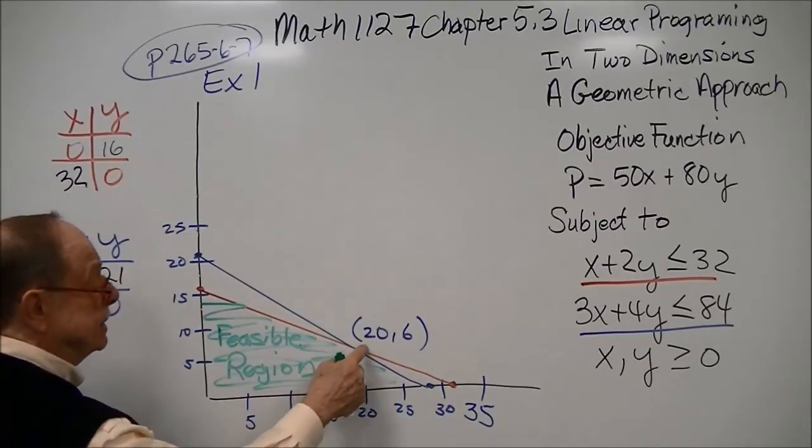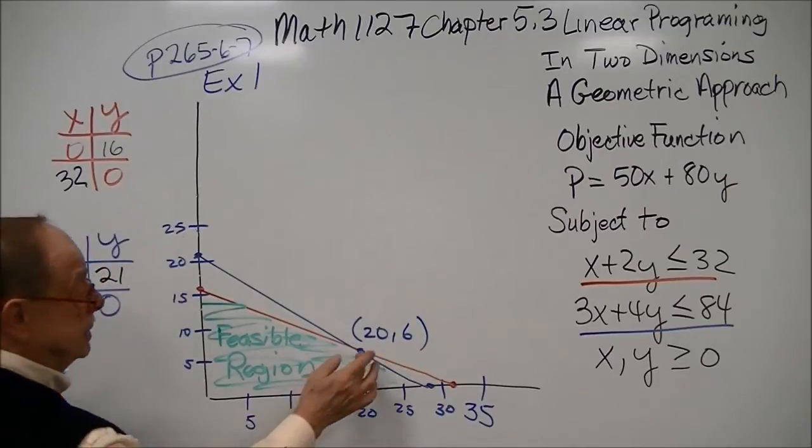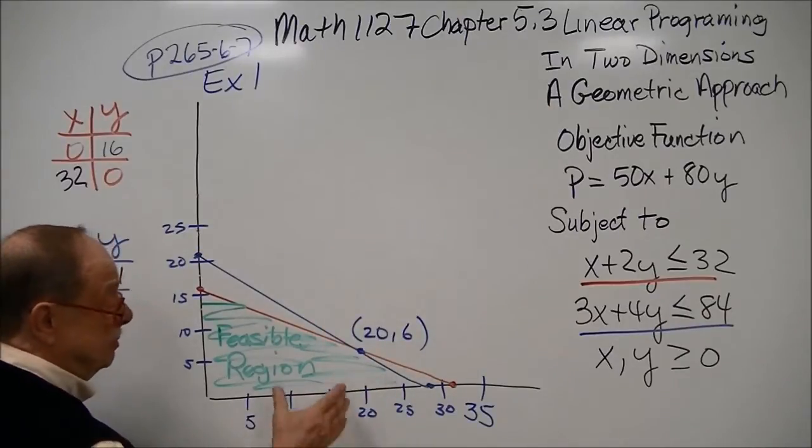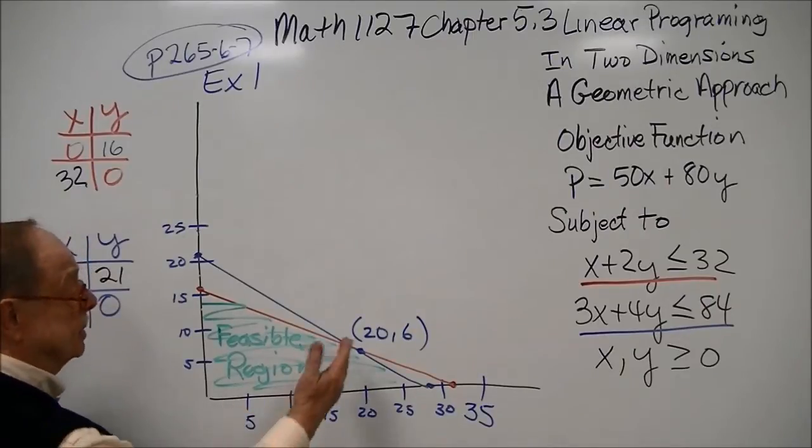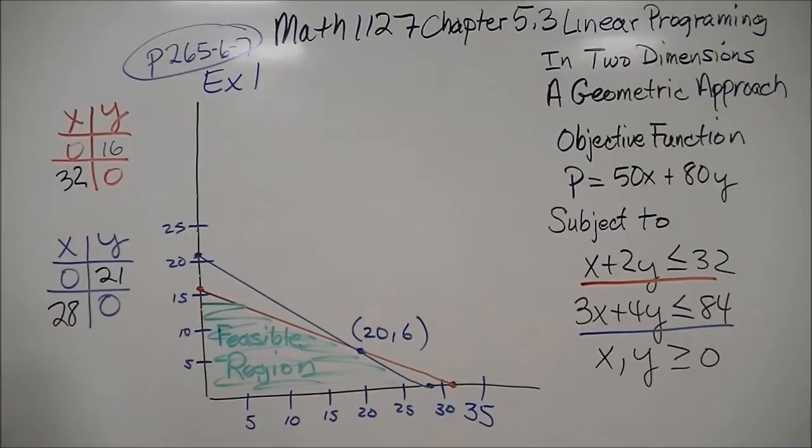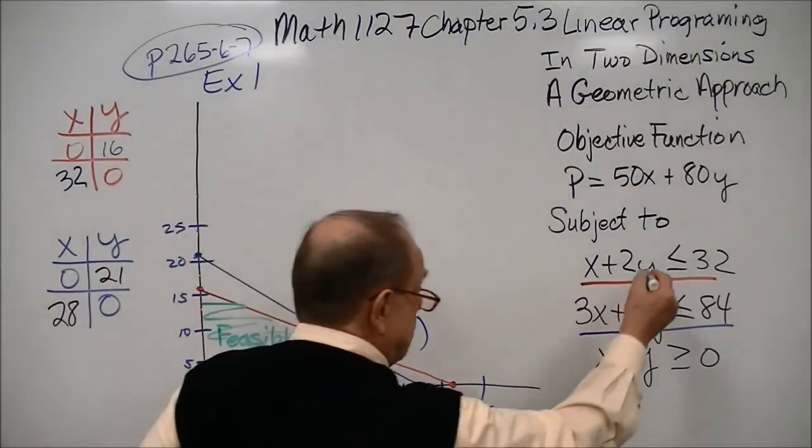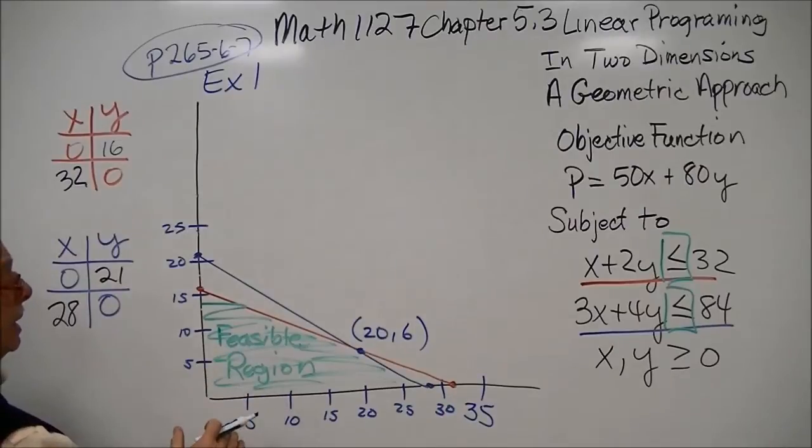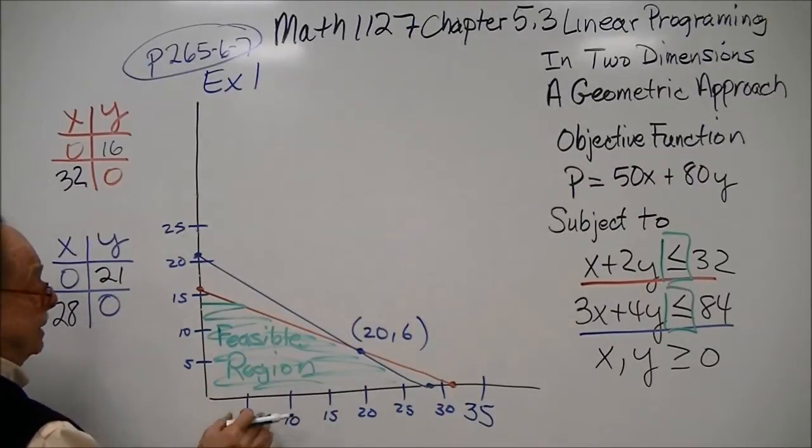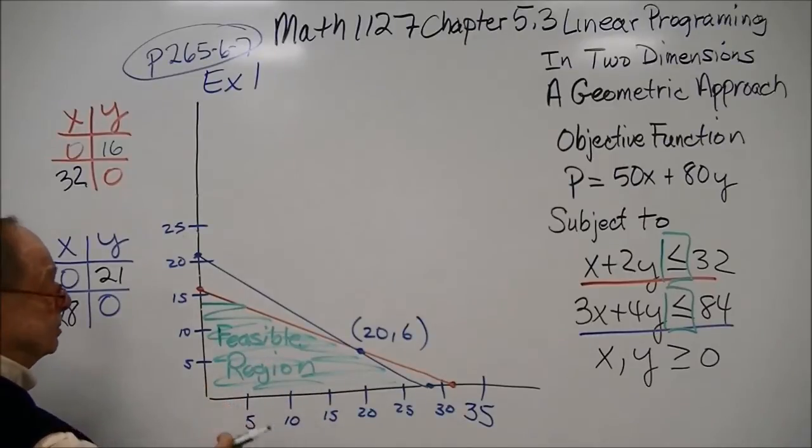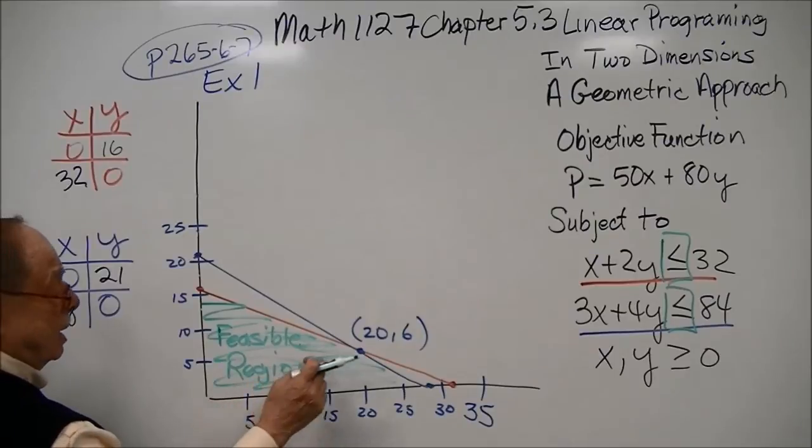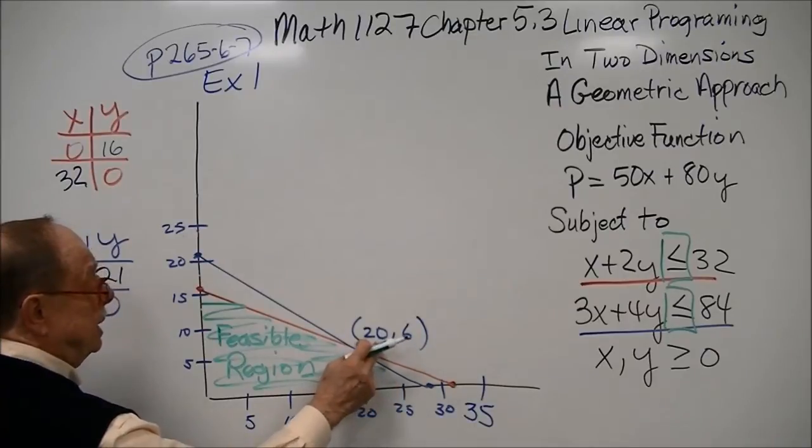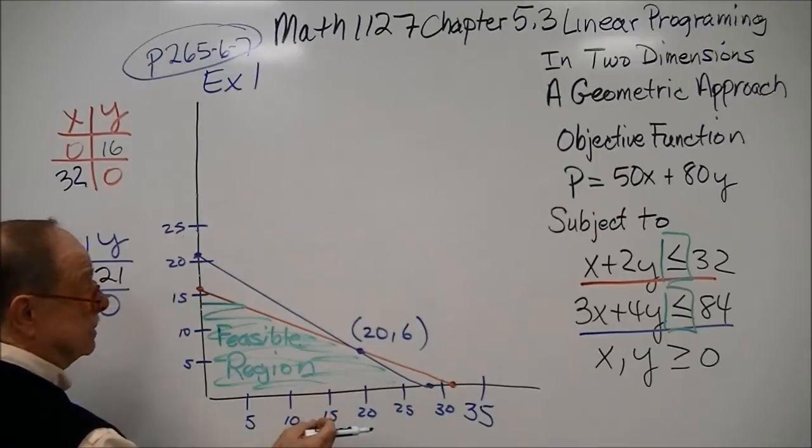You notice that these two lines intersect at this corner point, which is 20, 6. Keep in mind it's not too accurate because of the way I make the graph, but with proper graph paper, you can probably pick that out. Since both of these were less than or equal to, we shade the under the line area where they intersect. And there is the feasible region.